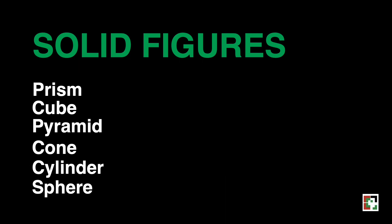We have different kinds of solid figures and these are prism, cube, pyramid, cone, cylinder, and sphere. We will tackle each of these figures one by one. We will start off with the prism.